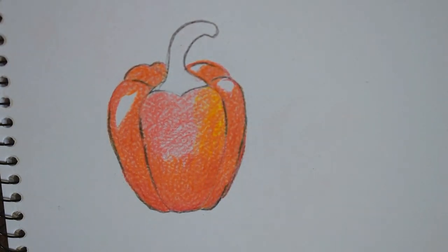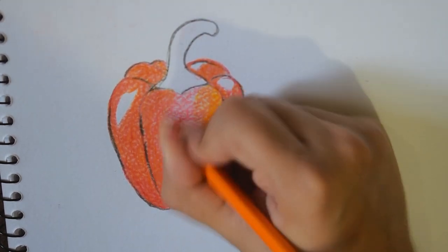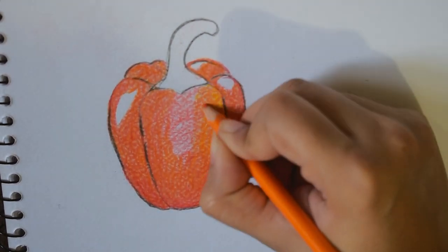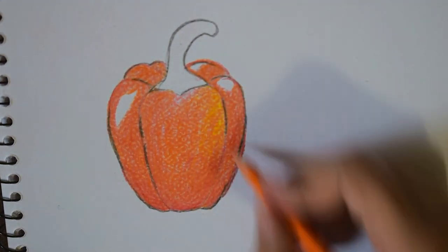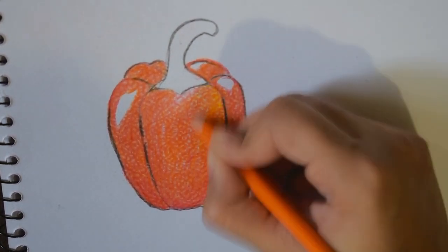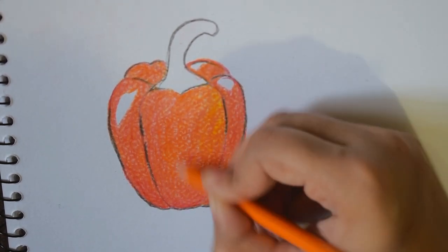Just go in circular motions and fill the whole thing up. I'm adding a bit of yellow for the highlight. Although I've used white, I'm still using yellow for the color transition.